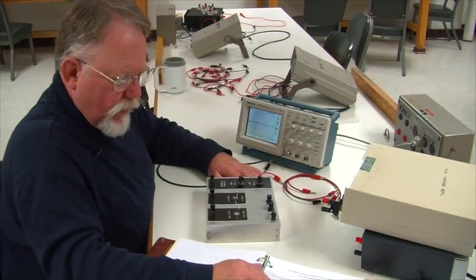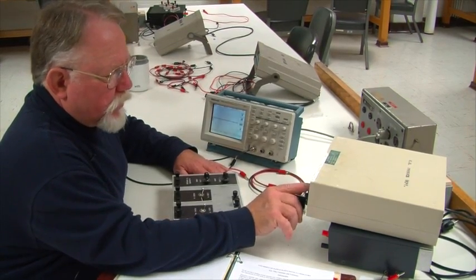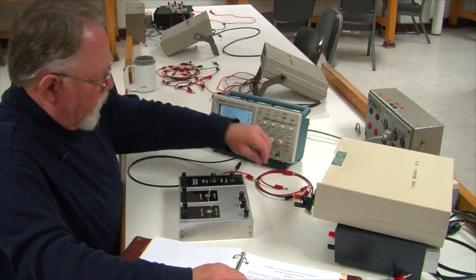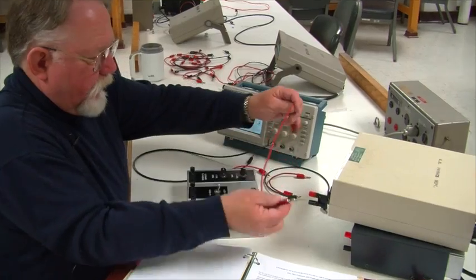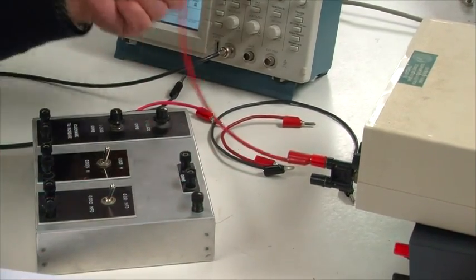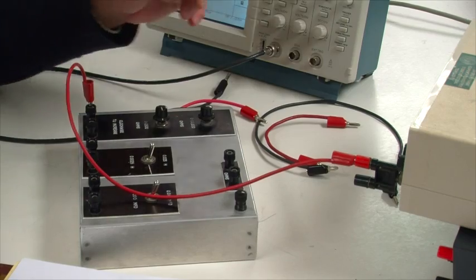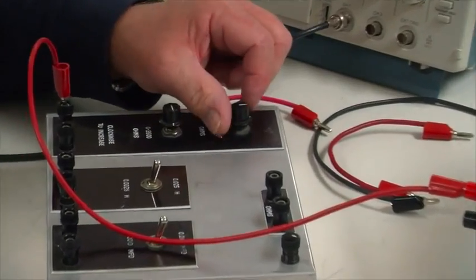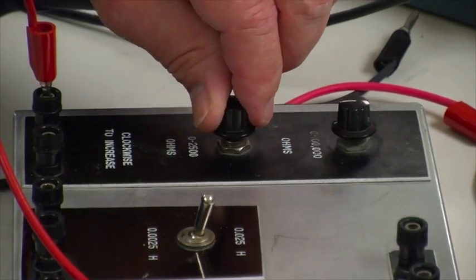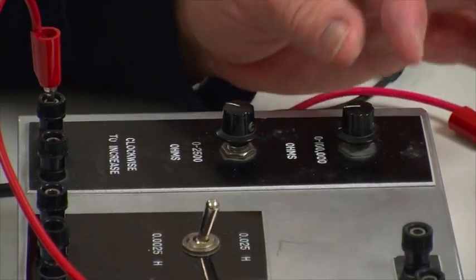Now we're going to be using our function generator here, but we're going to set it to put out a square wave instead of a sine wave. Here's the circuit. We come from the output of the function generator, and remember that's the red one, and we go first to the variable resistance, that's over here on this side of the box. And for this we want the 100K resistor turned all the way up, and the 2.5K turned all the way down, so the nominal resistance will be 100K.